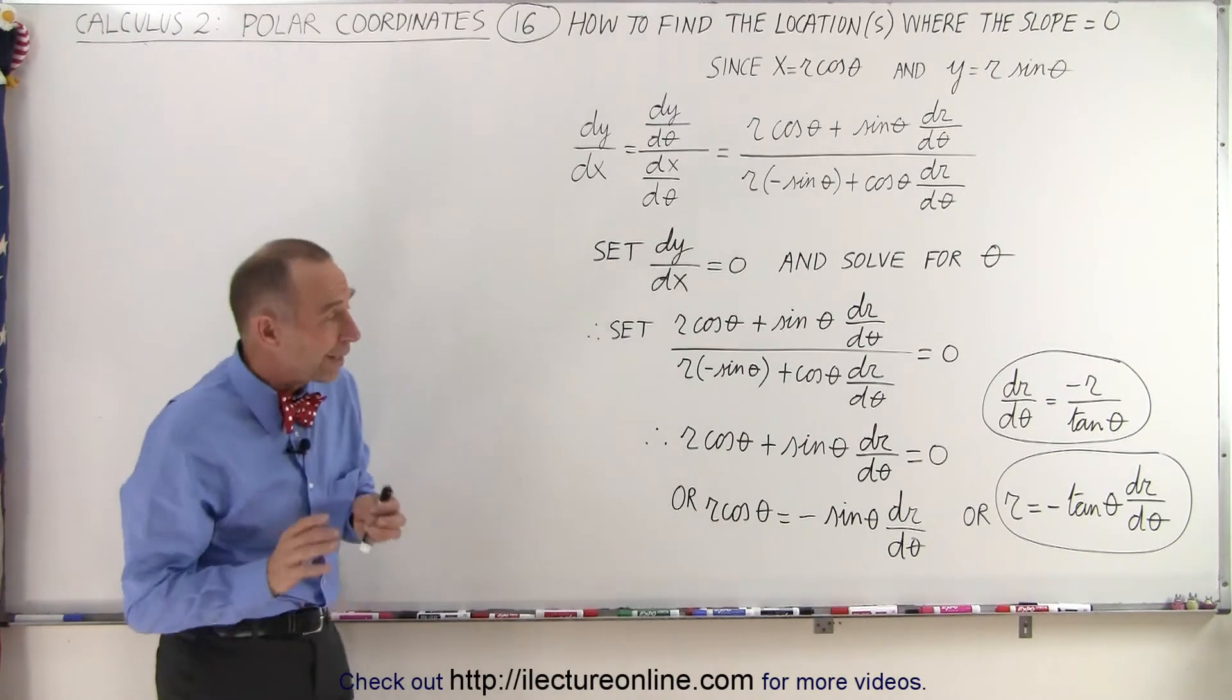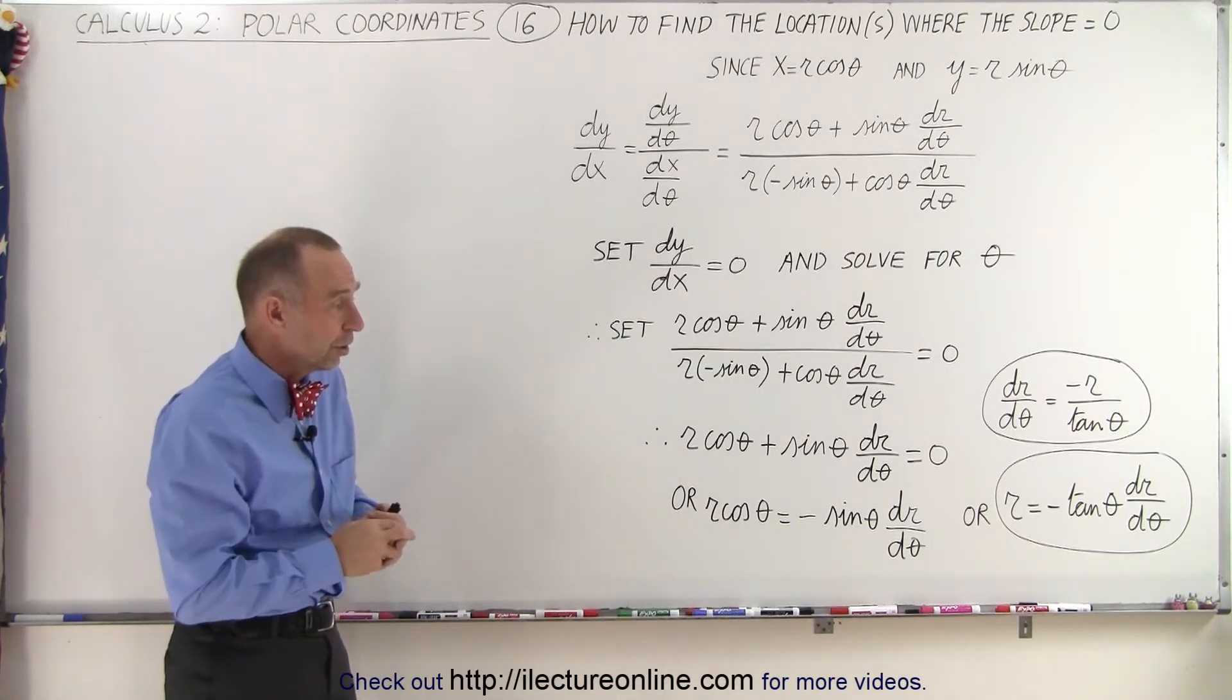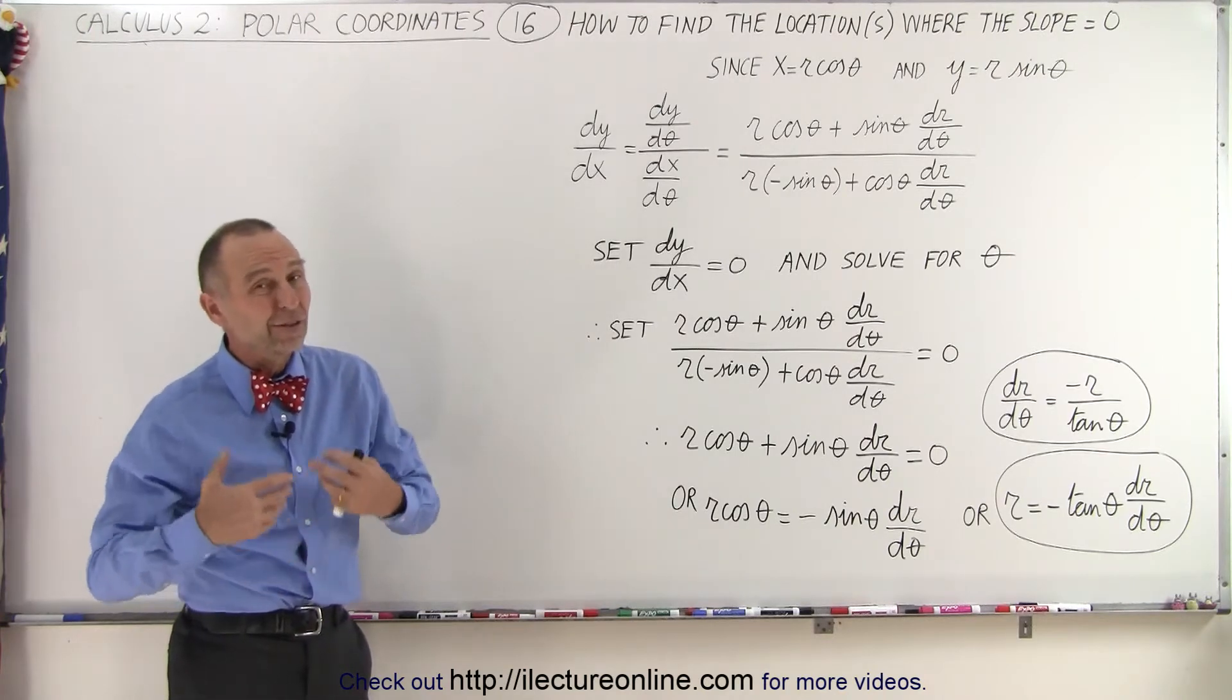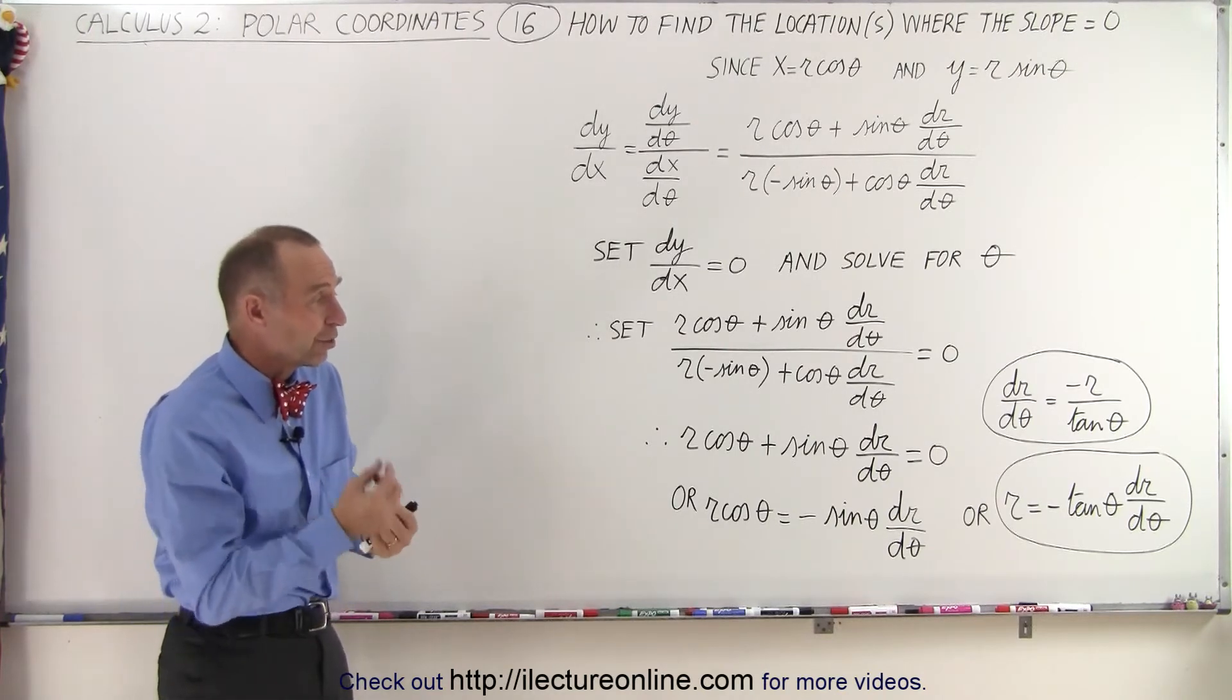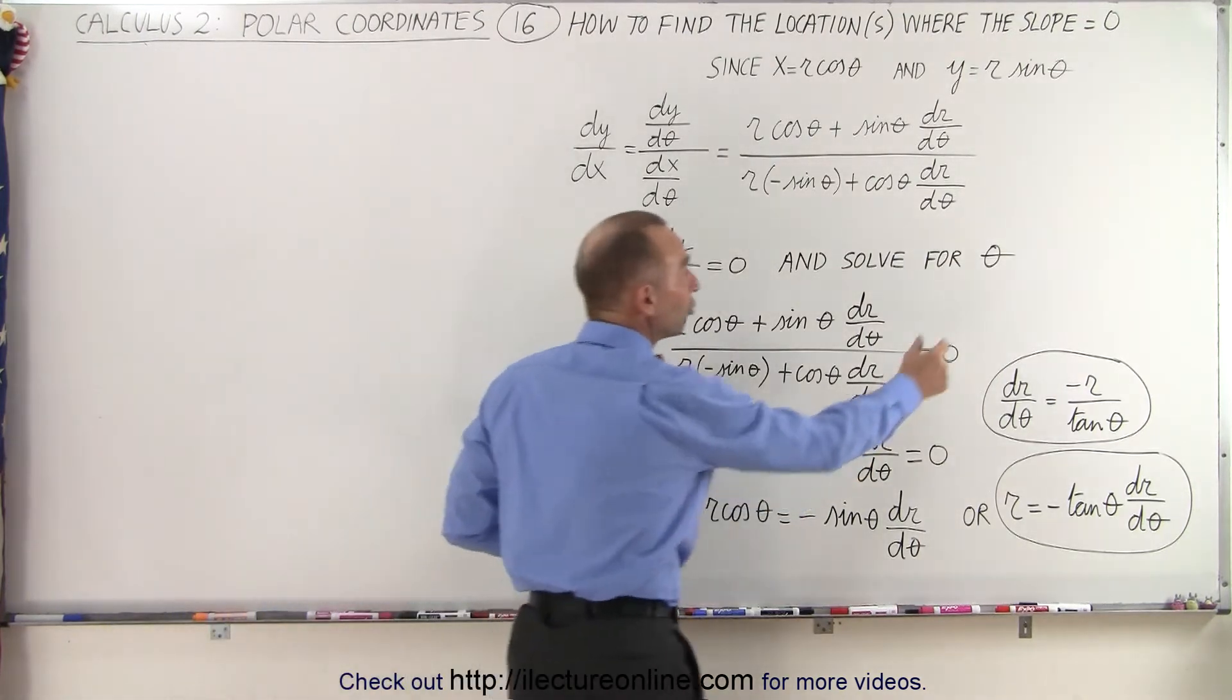Now that doesn't help you quite yet as a general expression of finding where on the function the slope is equal to zero. But you still need to find the proper values for r and theta to do so. So essentially, we need to solve for theta.